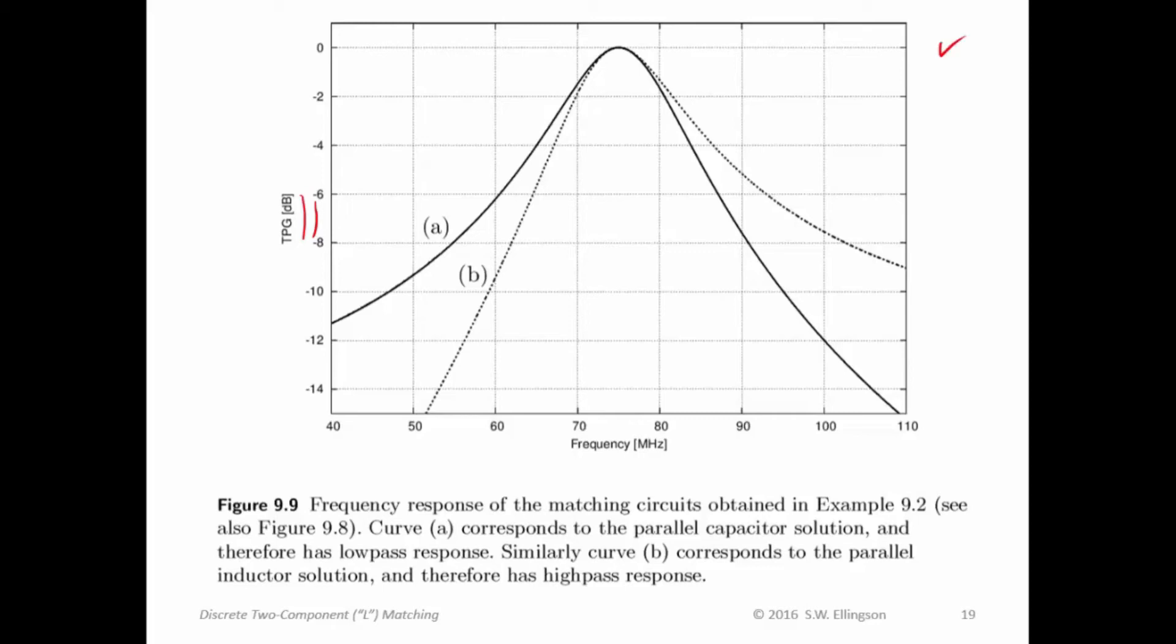In this plot, I have frequency in megahertz, a TPG. Here's 75 megahertz, which is the design frequency. And at 75 megahertz, I see, in fact, I get a TPG of 1, which is 0 dB. And at all other frequencies, the TPG is less than 1, which is what we expect. It must be less than 1 because this is a passive circuit. And at a passive circuit, we would expect to see TPG less than 1 for all of the frequencies.